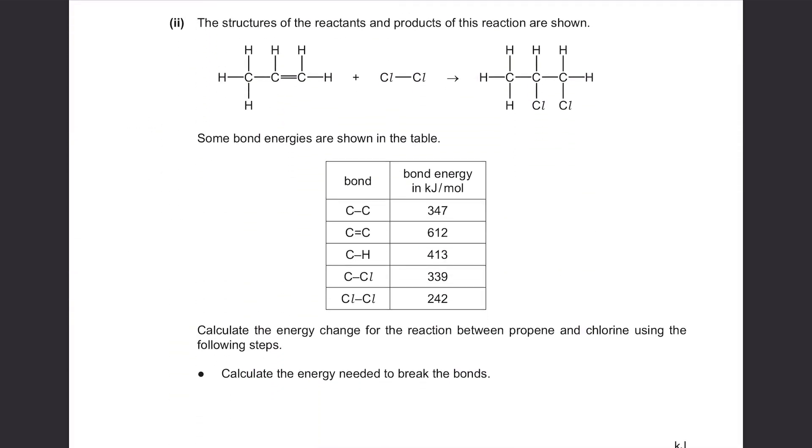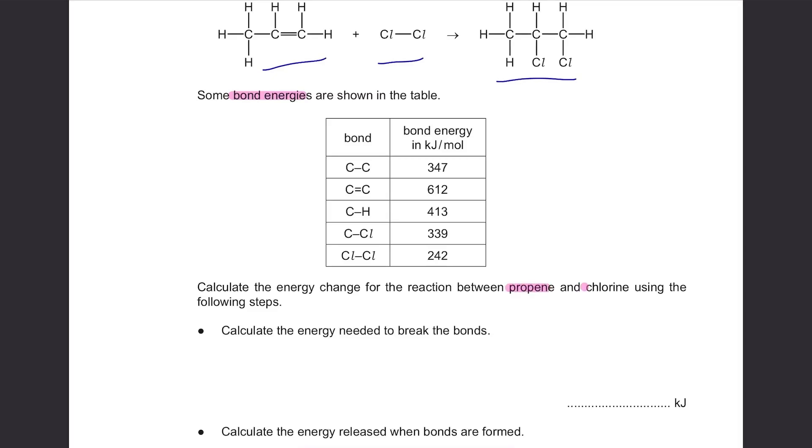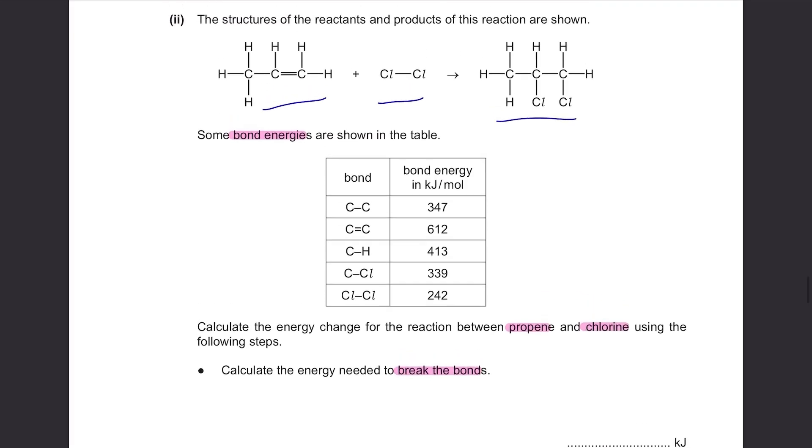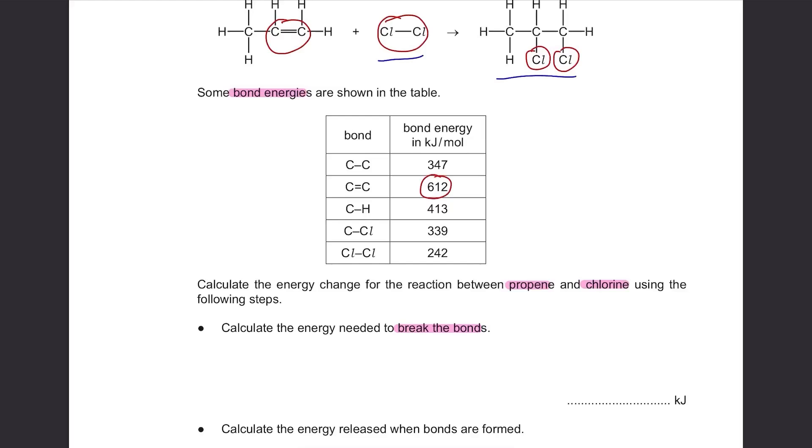The structures of the reactants and products of this reaction are shown. Some bond energies are shown in the table. Calculate the energy change for the reaction between propene and chlorine using the following steps. Calculate the energy needed to break the bonds. You might think that you have to calculate the energy needed to break all the bonds here, but no, we don't have to break every single bond. In fact, you can only break these two bonds. The reason because we're just going to add two Cl atoms over here, and we don't need to change the whole formation. So add 612 with 242. 854 kJ.